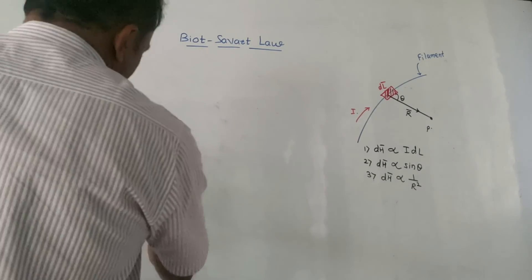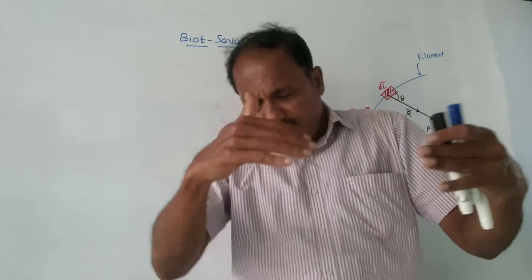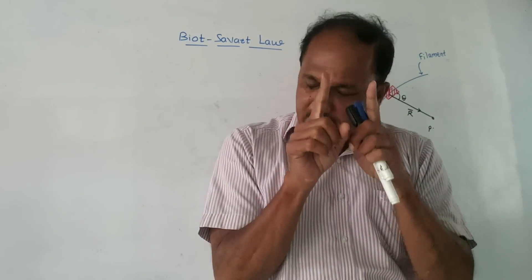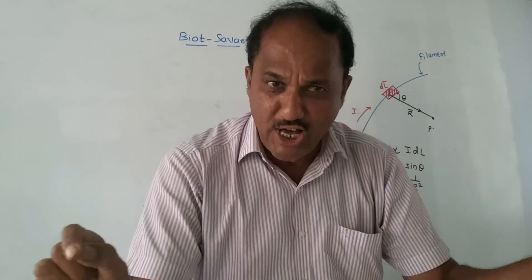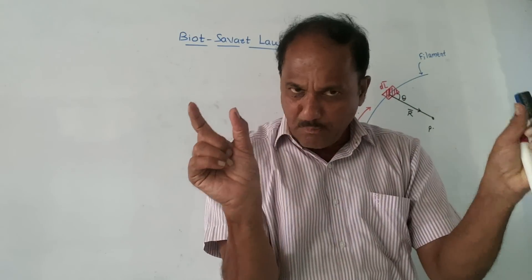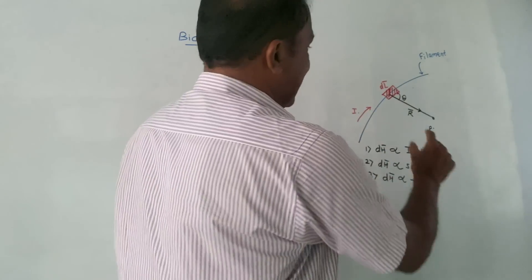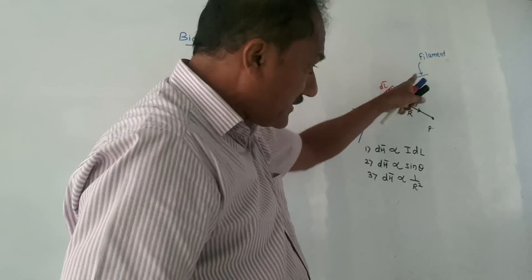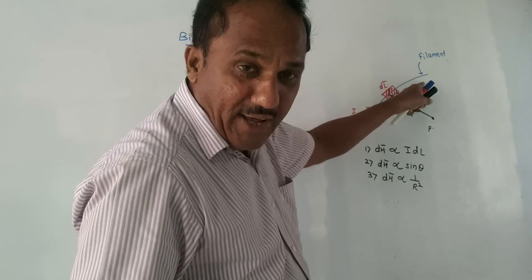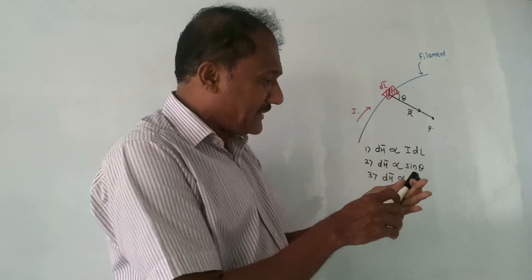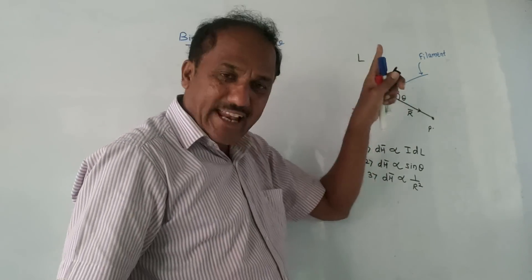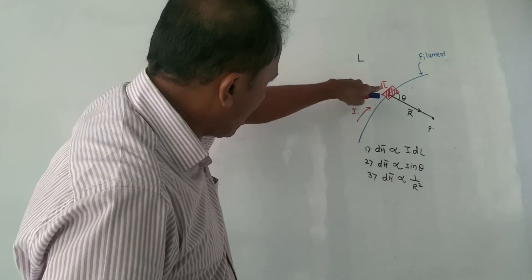Now the first derivation is the derivation of Biot-Savart Law. In earlier electric field videos, we considered a small point charge. But whenever you are attempting the derivation of magnetic field, remember you don't have to consider a point charge — instead you consider a small length. Suppose a filament: this is one filament, which means a piece of wire. The total length of the filament is capital L, and its small portion is dL bar, a differential vector quantity.